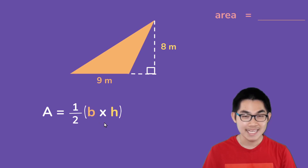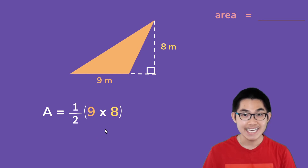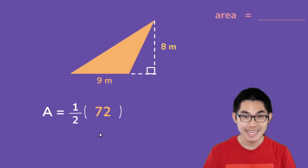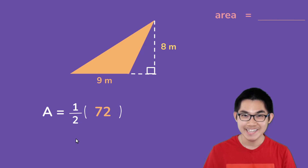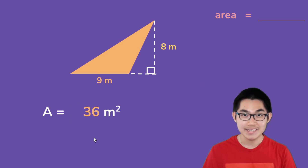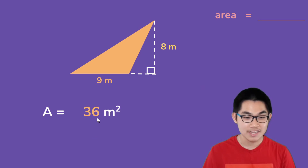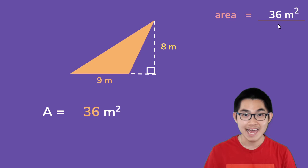So we know that the base is 9 meters and the height is 8 meters. 9 times 8 gives you 72, and 72 divided by 2 gives you 36. So the area for the orange triangle is 36 meters squared. And that is our answer.